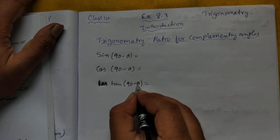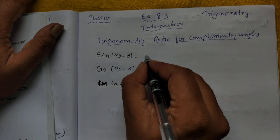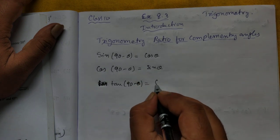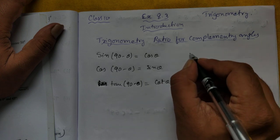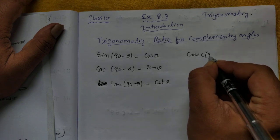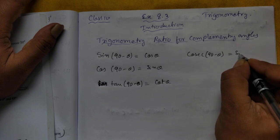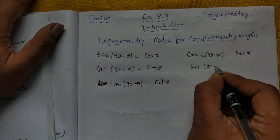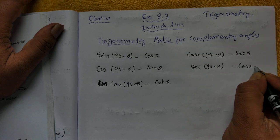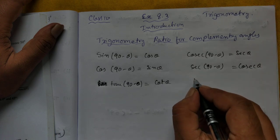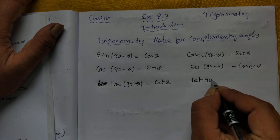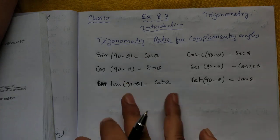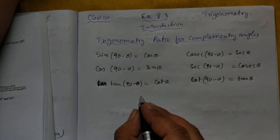Theta is any angle — it can be any value. The six formulas are: sin(90° − θ) = cos θ, cos(90° − θ) = sin θ, tan(90° − θ) = cot θ, cosec(90° − θ) = sec θ, sec(90° − θ) = cosec θ, and cot(90° − θ) = tan θ. These are the six formulas you have to know.